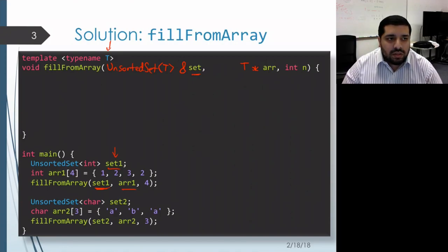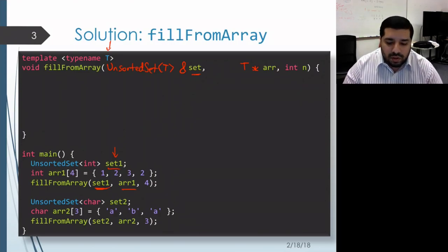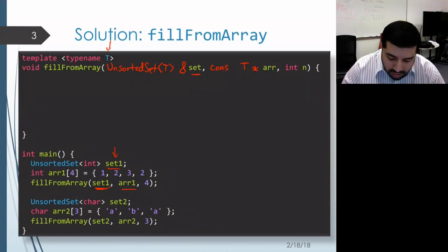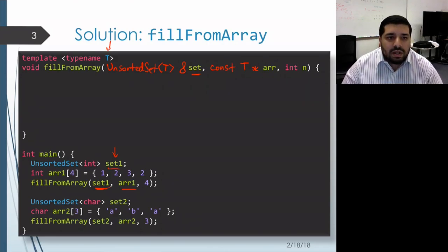One observation is that in order to copy elements out of the array into the set, we're not actually going to need to modify the contents of the array. So rather than making this just a regular old pointer to T, we should make it a pointer to a const T, and that way the compiler will keep us honest and make sure that we don't inadvertently modify any of the elements.